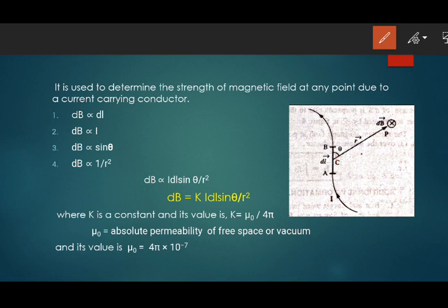This is AB, whose length is dl. It is just a very small portion of the wire. Let us consider a point P, which is at a distance r from the point C. C is the center of the element dl. P is at a distance r.